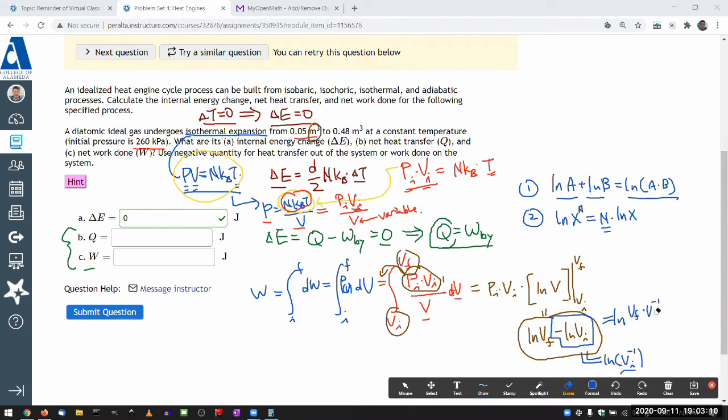Or write it the normal way, as V final over V initial. So you get this ratio. Units nicely cancel out, and you only have to worry about natural log of a unitless number, which is how it always should be.